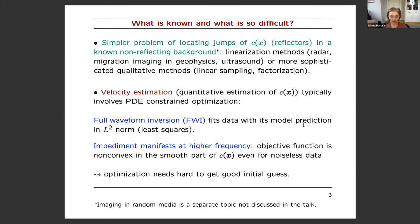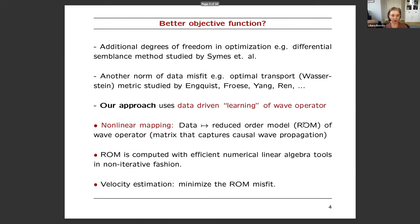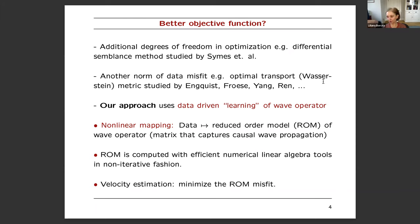Various attempts have been made to mitigate this problem. One introduces additional degrees of freedom in the optimization systematically — due to the group of van Leeuwen. Another measures the data misfit in a different norm, specifically using optimal transport — initiated by the group of Engquist. Both have gained traction but all of this is still ongoing; nothing is fully solved. We propose a different approach using what we call data-driven learning of the wave operator.